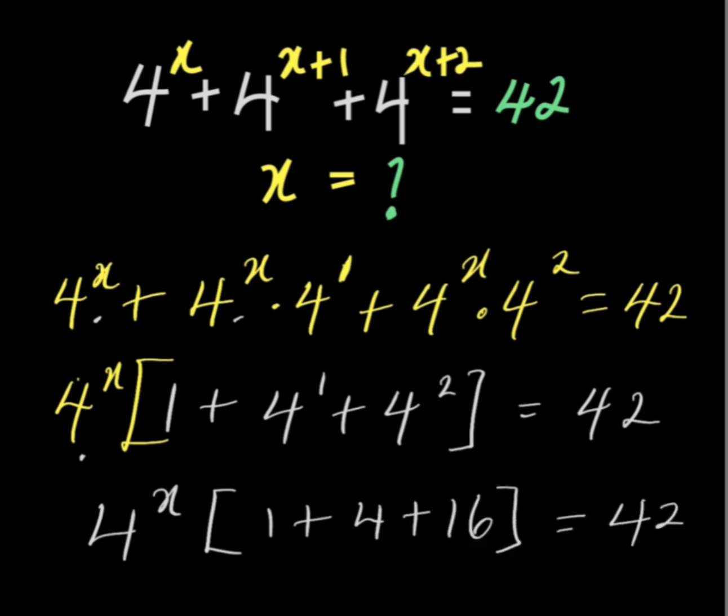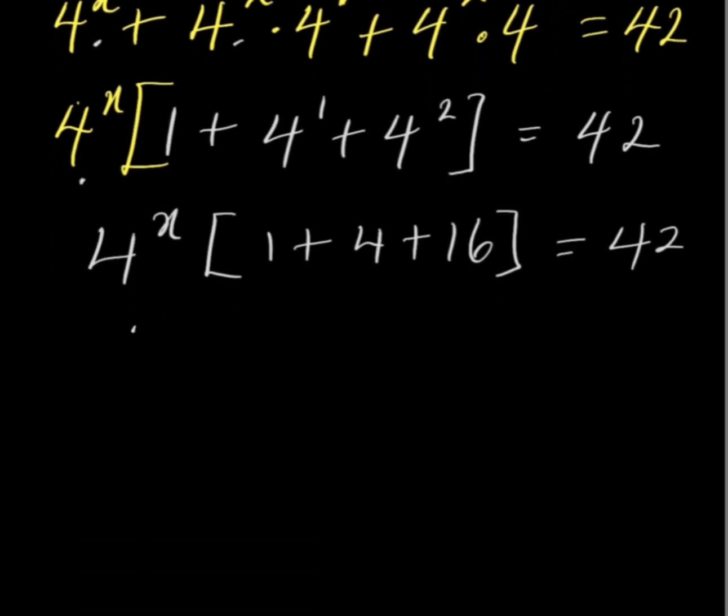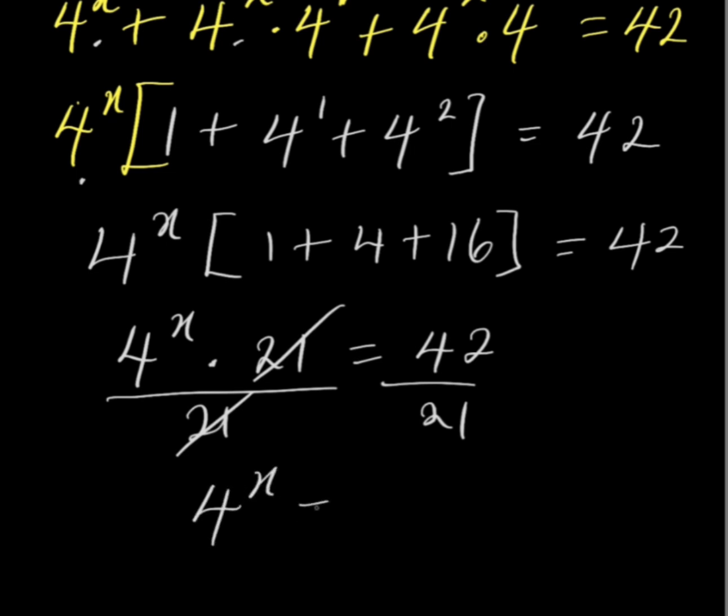So, we have that 4 to the power of x multiplied by 16 plus 4 is 20 and 20 plus 1 is the same thing as 21. Everything is equal to 42. So, let us divide both sides by 21 so that we can get rid of the 21 at the left hand side. This will cancel out. We have 4 to the power of x is equal to 42 divided by 21 is equivalent to 2.